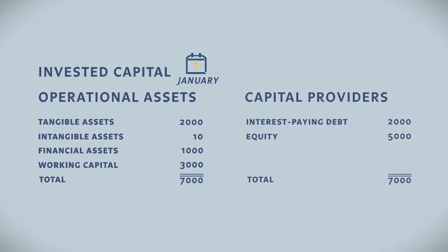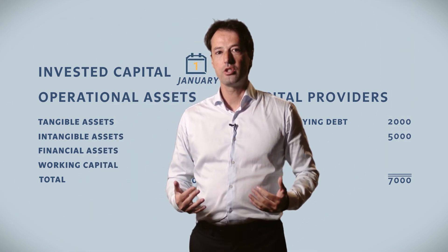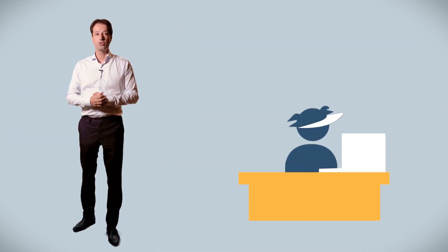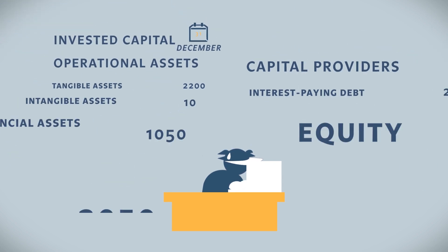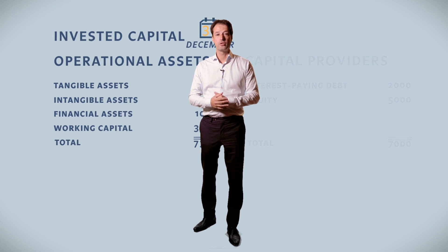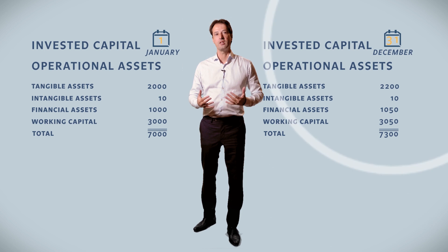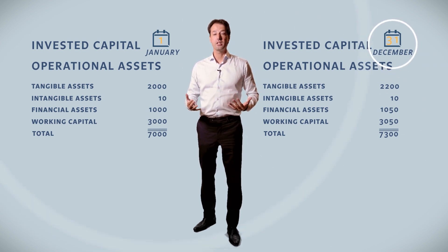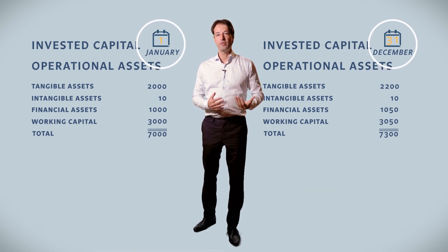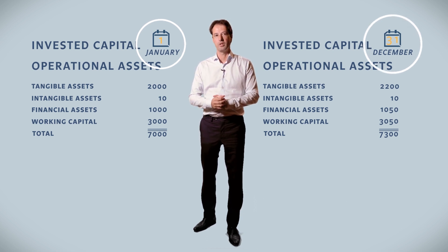We take the invested capital and all of the investments in the operational assets at the start of the year. Since we also need to have this statement at the end of the year, we ask our controller for this information. In order to calculate the CAPEX, we look at the difference between the operational assets at the end of the year and at the start of the year. The difference is the level of capital we invested in the operations during this specific period.